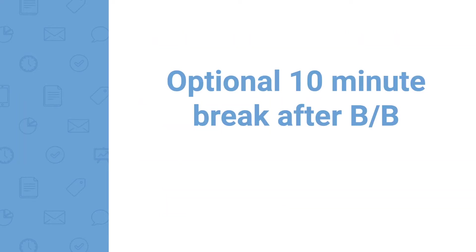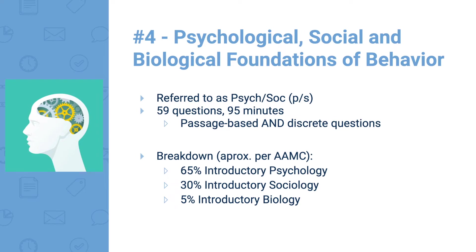After Bio-Biochem, you'll have another 10-minute break — use it as best you can before heading into the fourth and final section: Psychological, Social, and Biological Foundations of Behavior, known as PsychSoc. It's 59 questions and 95 minutes, with both passage-based and discrete questions. The breakdown is 65% introductory psychology, 30% introductory sociology, and 5% introductory biology.